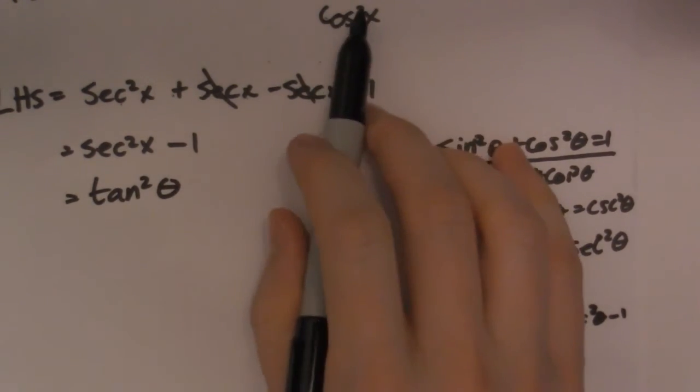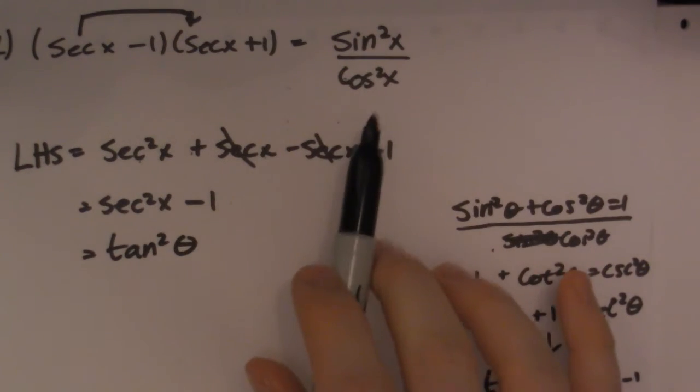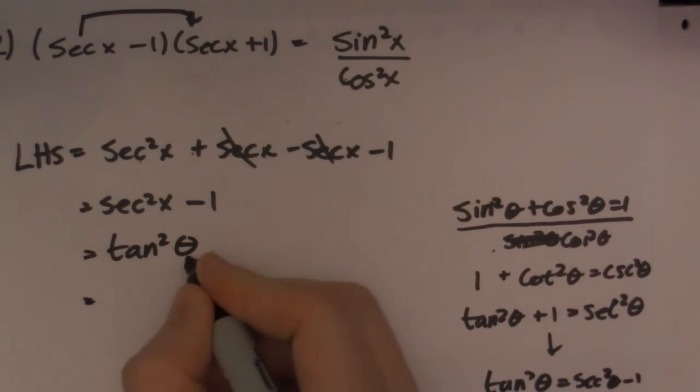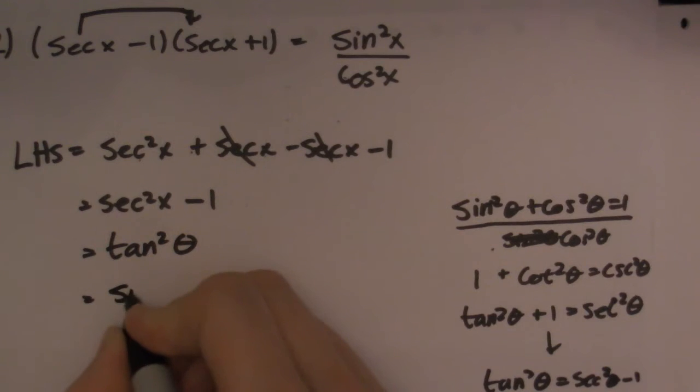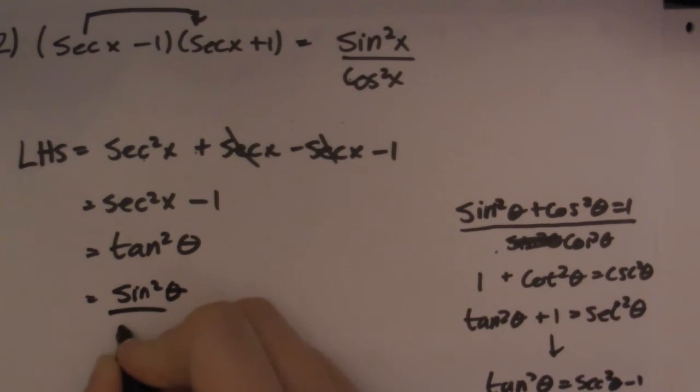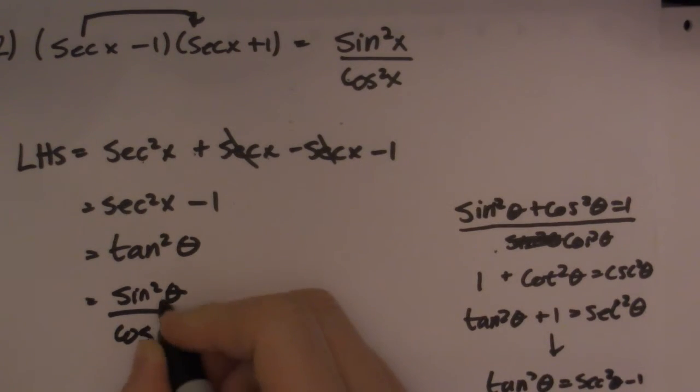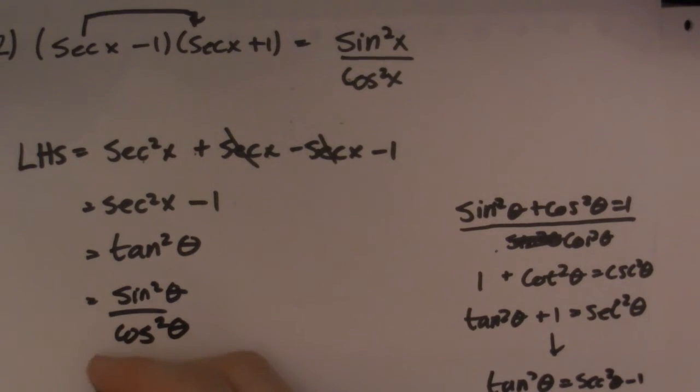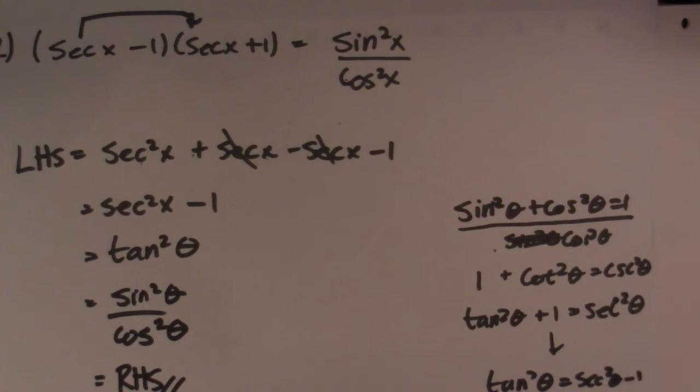Now, if you look at the right-hand side over here, I have sine squared over cos squared. So I'm just going to rewrite this guy as sine squared theta over cos squared. So remember, tan is sine over cos, so tan squared is sine squared over cos squared, which is equal to the right-hand side, and my proof is done.